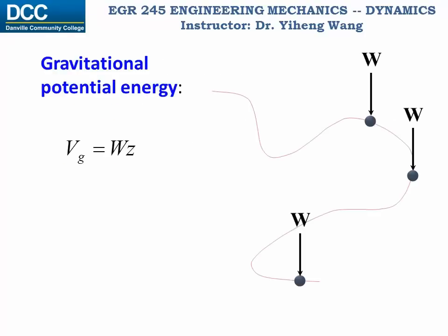Potential energy is normally denoted by the letter V, and the gravitational potential energy Vg, which is the potential energy associated with the weight of an object, equals its weight W multiplied by its vertical location z. Its vertical location can be represented by other letters depending on the coordinate system chosen. To calculate the gravitational potential energy we first need to draw a datum where the vertical location z is zero. Therefore for any location above this datum z is positive and the gravitational potential energy is positive.